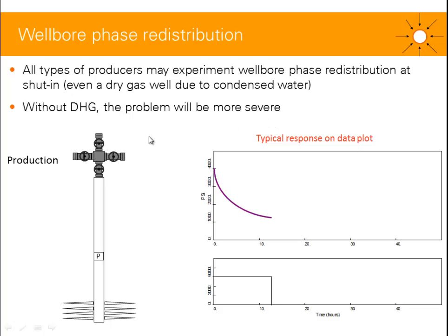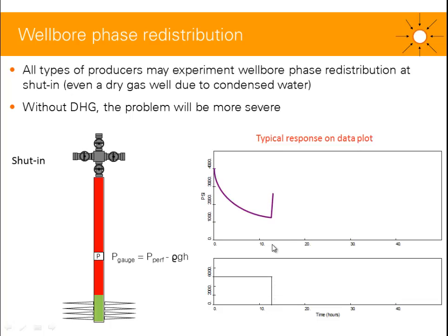Here I'm going to show you a quick example from a gas condensate well, and we're going to see the typical response on the data plot. Let's assume the well is flowing and pressure decreases this way. We've got a drawdown, and then we perform a shut-in, so pressure increases this way.